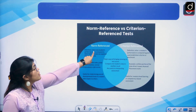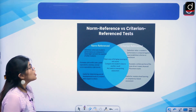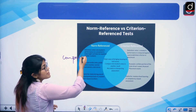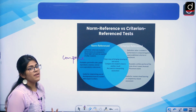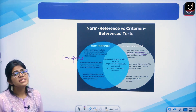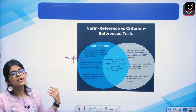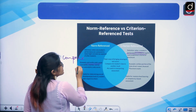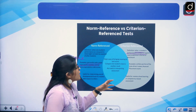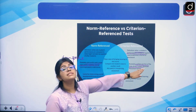In norm reference evaluation, one student's performance is compared to what is normally expected of other students. In criteria reference evaluation, a student's performance is compared against a pre-established criteria or benchmark — for example, A plus is given to those who scored 95% and above. In norm reference, percentile, grade equivalence, normal curve equivalence, and scale scores are calculated. In criteria evaluation, written portions are checked and advanced placement tests are used.